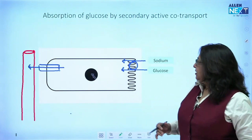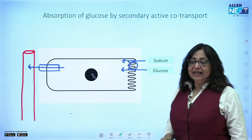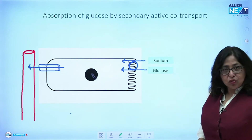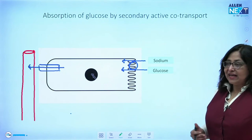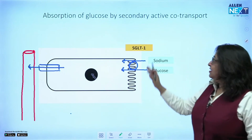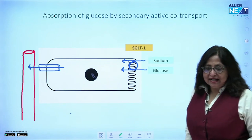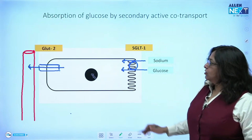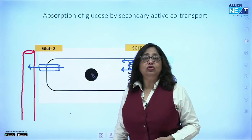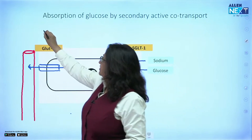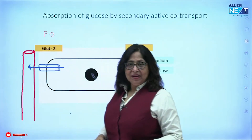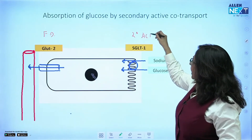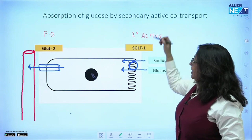Looking at the diagram — absorption of glucose in the intestinal epithelial cells: towards the luminal side you have the sodium-glucose co-transport, which is an example of secondary active co-transport with the help of SGLT-1 (Sodium-Glucose Linked Transport 1). On the basal side there is GLUT-2, and GLUT-2 is an example of facilitated diffusion.